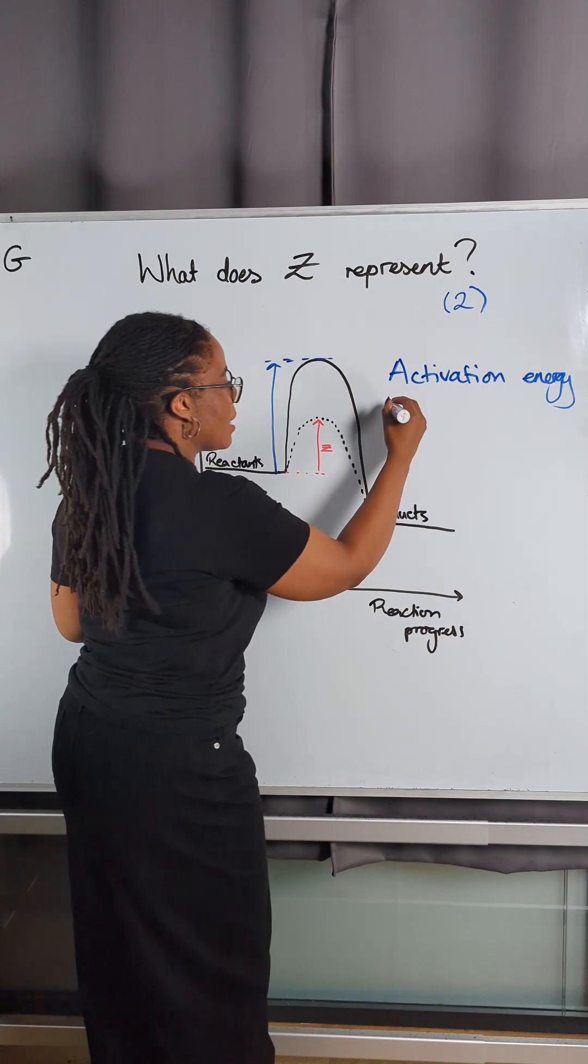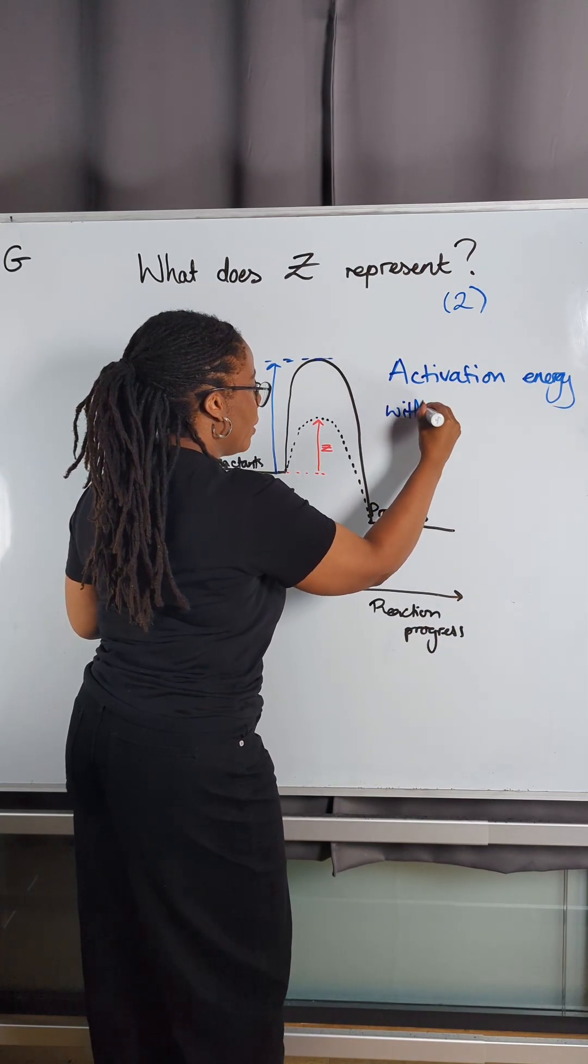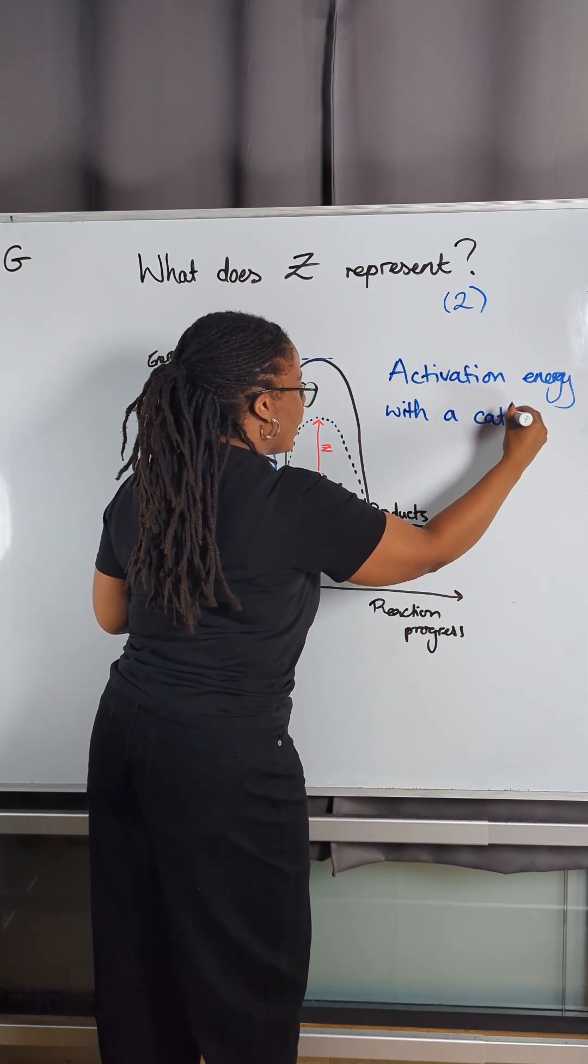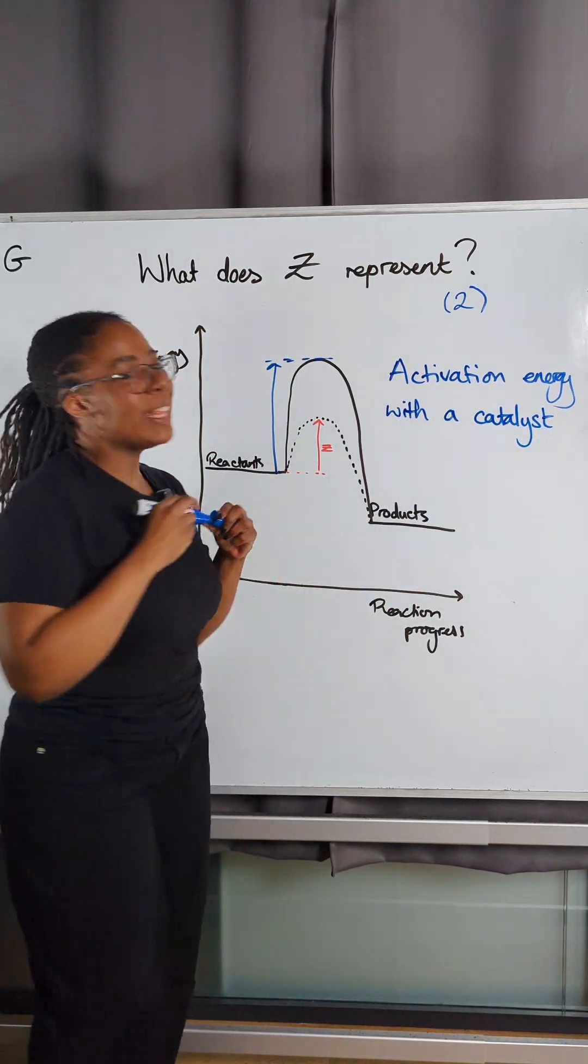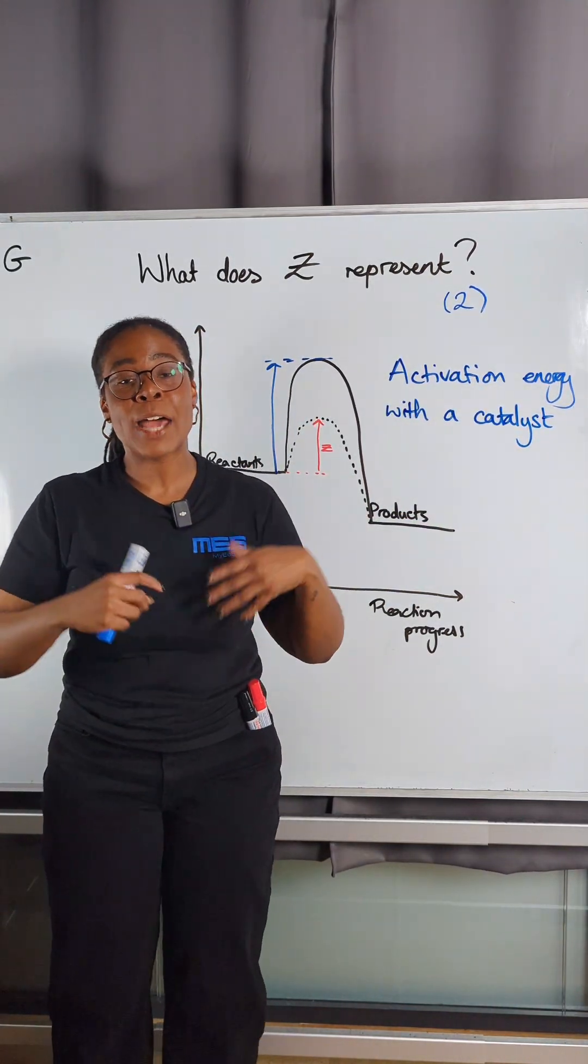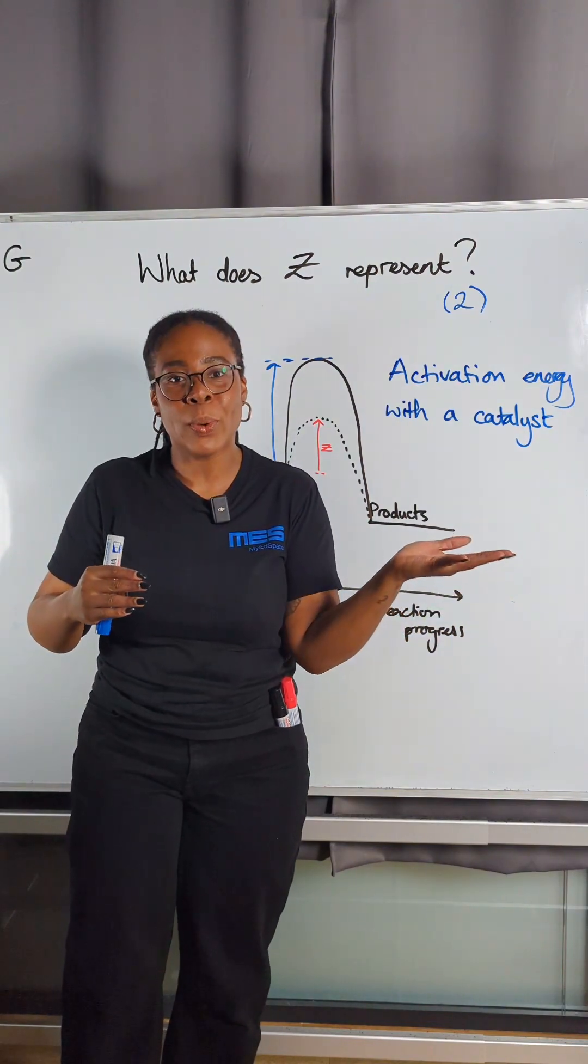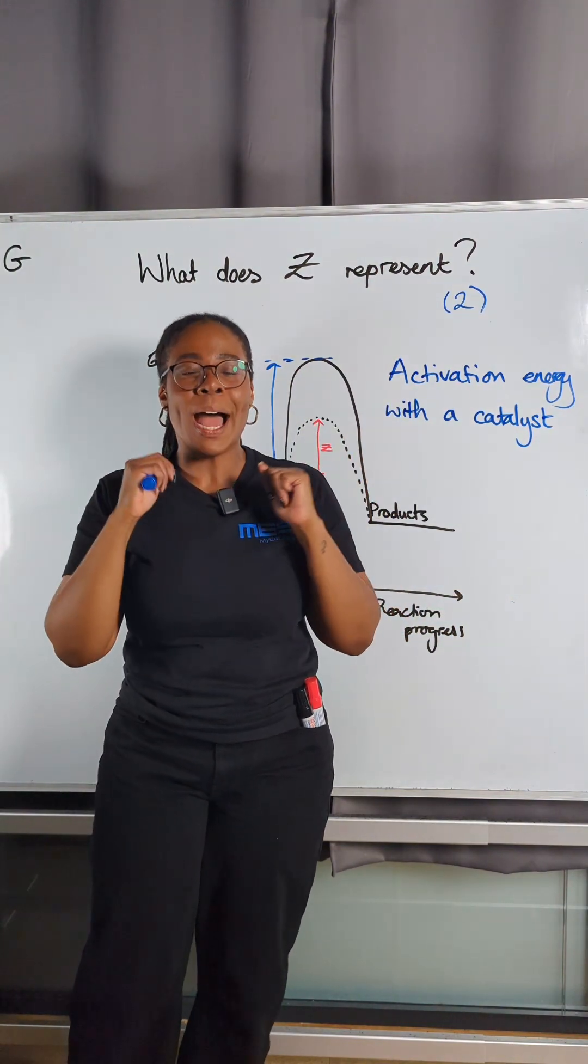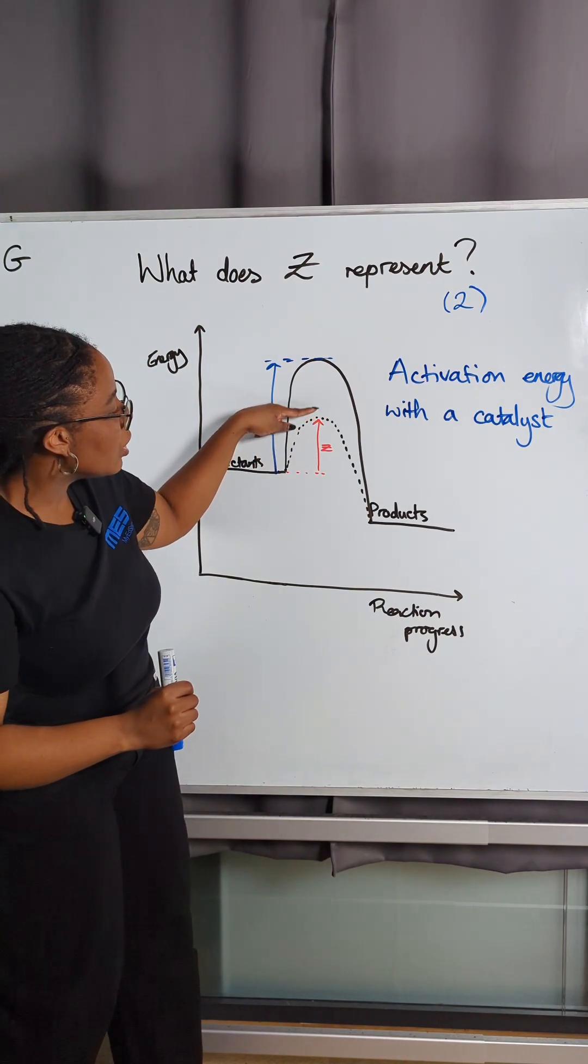So it stands to reason that this is the activation energy with a catalyst, because we know that the way that catalysts work is by providing an alternative reaction pathway with a lower activation energy.